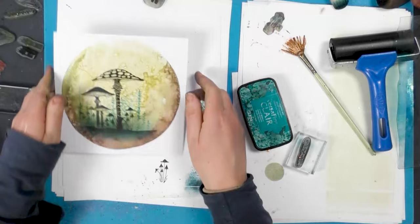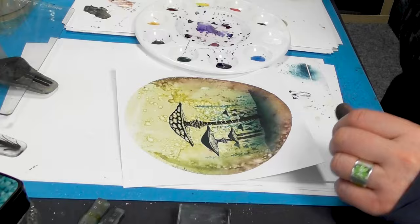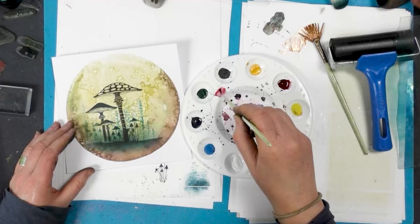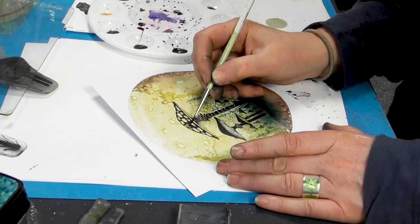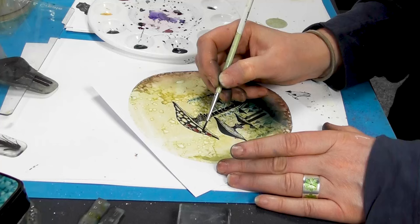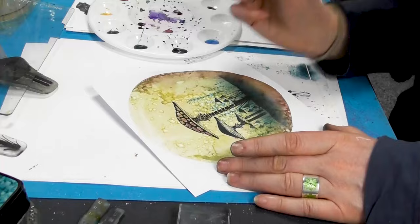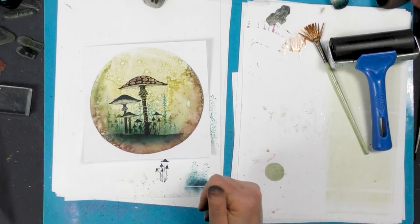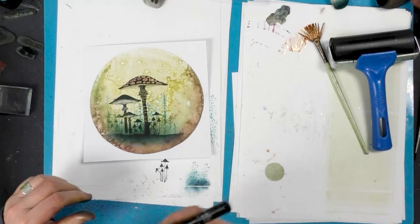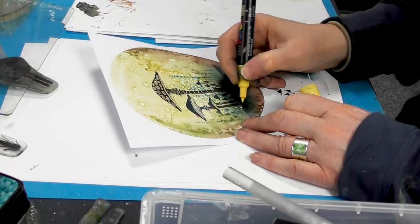I've got some watercolour paints here, and all I'm going to do is just pick up a little bit of the red, just to paint in the spots on the mushroom. So now I'm going to use some of the Posca pens for a few little dots.